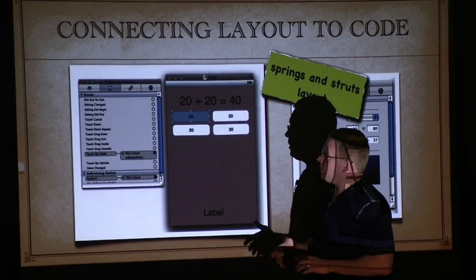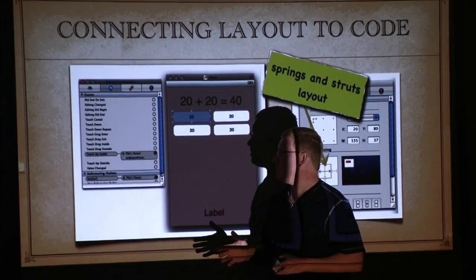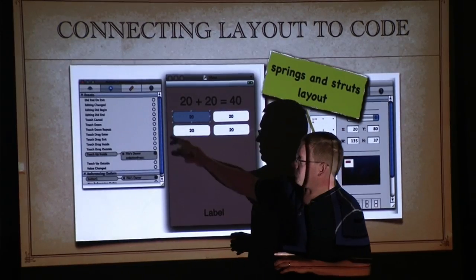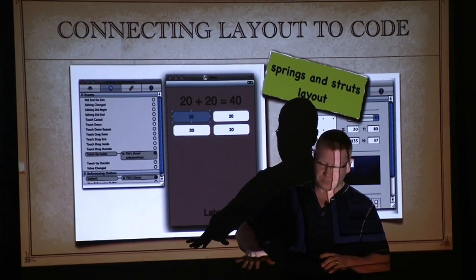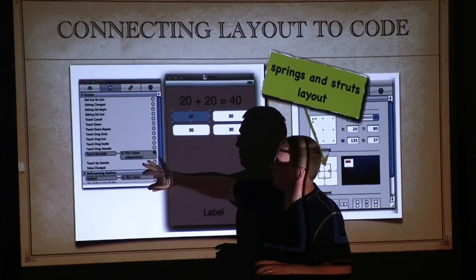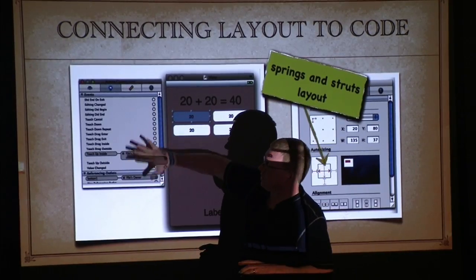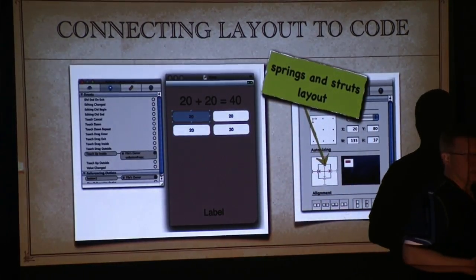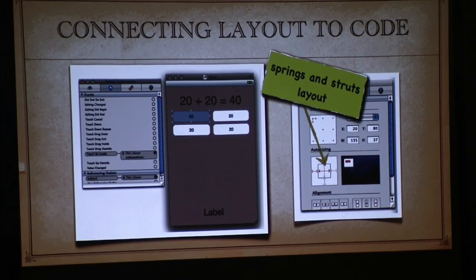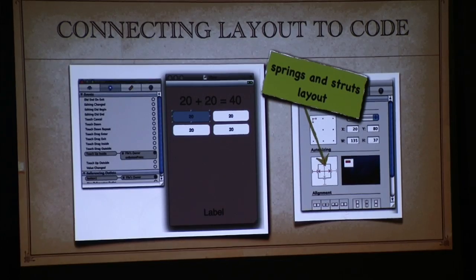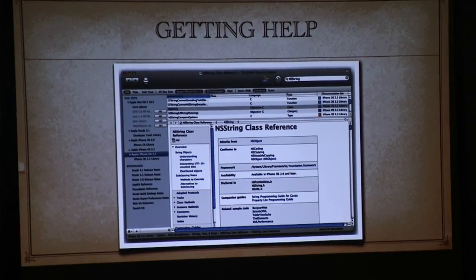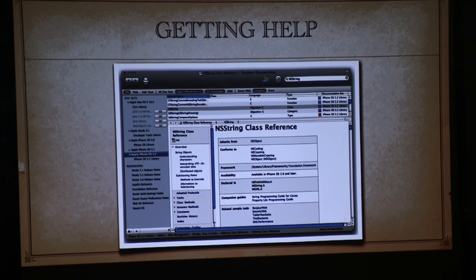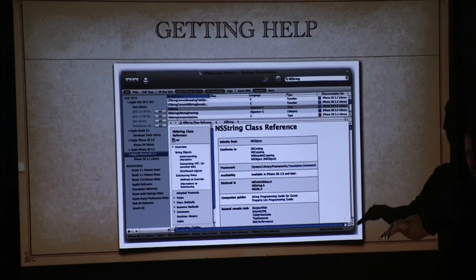The way that we connect to the code is through these connectors. We create some outlets in the code and then we connect them to the buttons using this connections panel. I'm going pretty fast because I know we're kind of tight on time, but am I losing anybody? There's also a whole help system which will give you all the information you need on their framework.